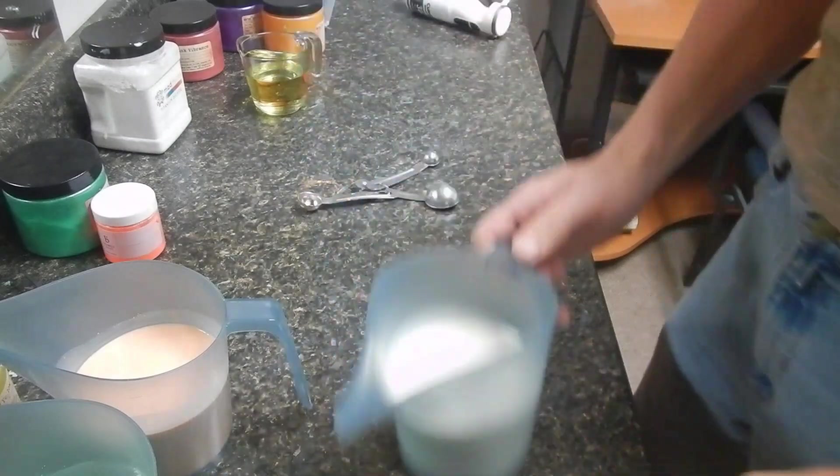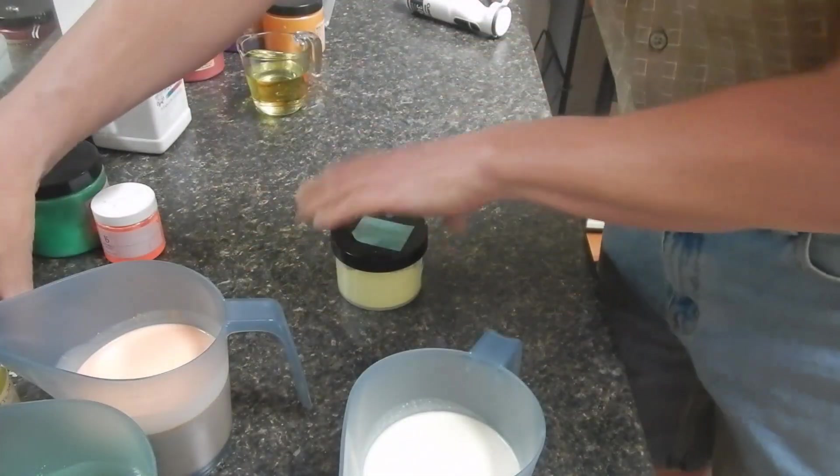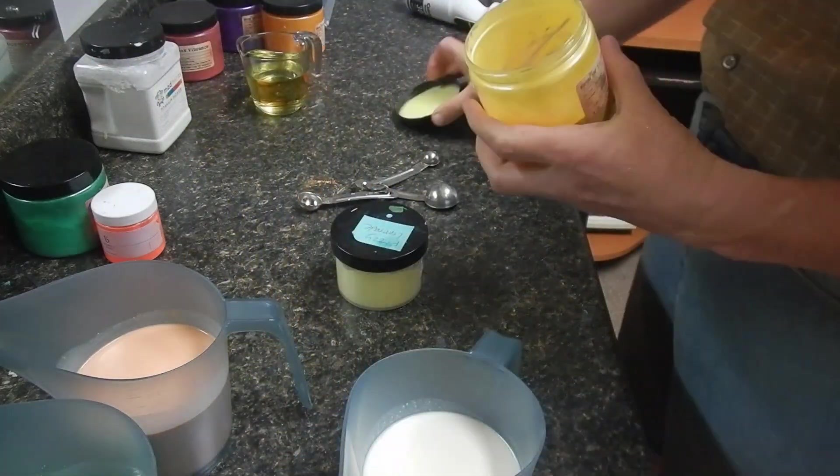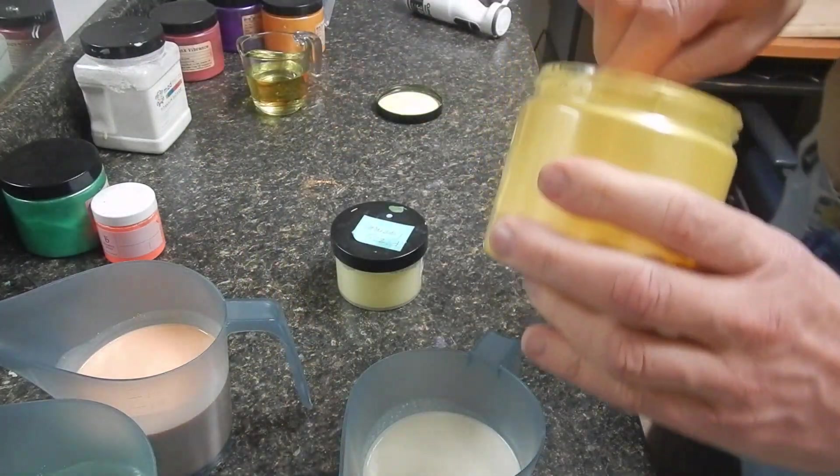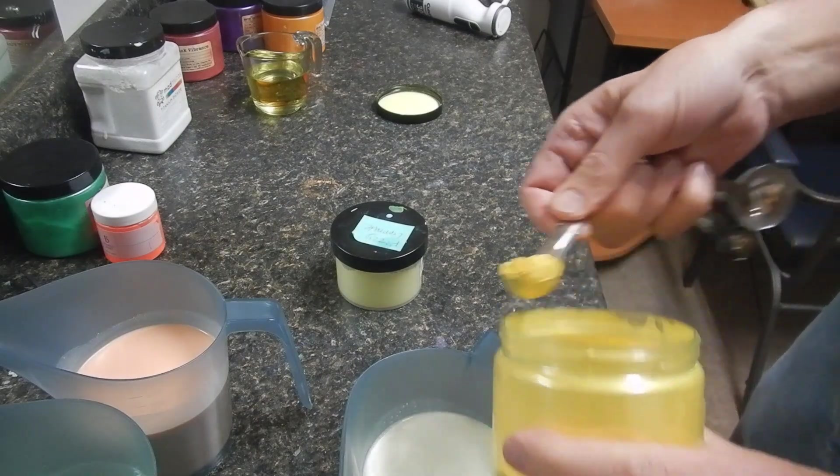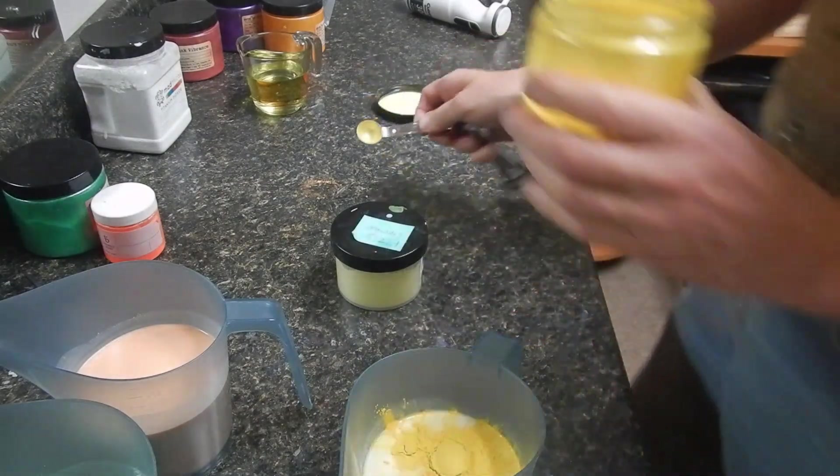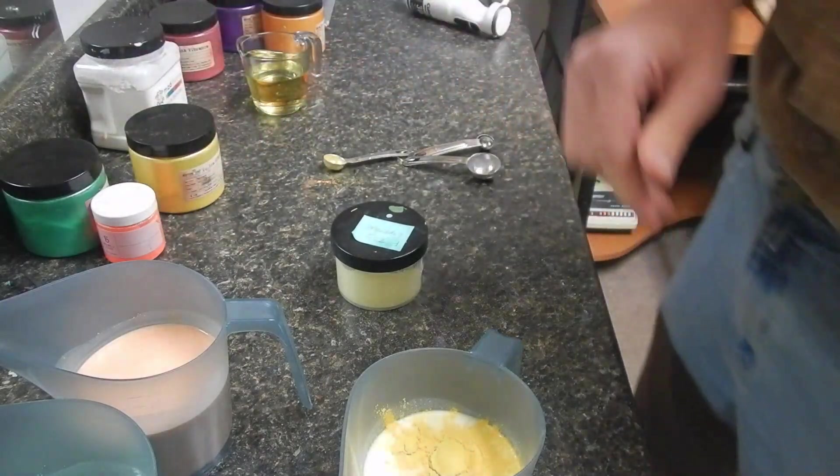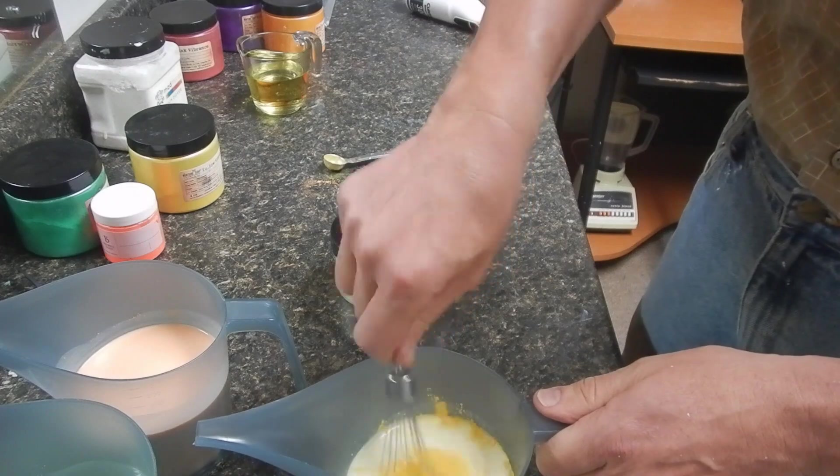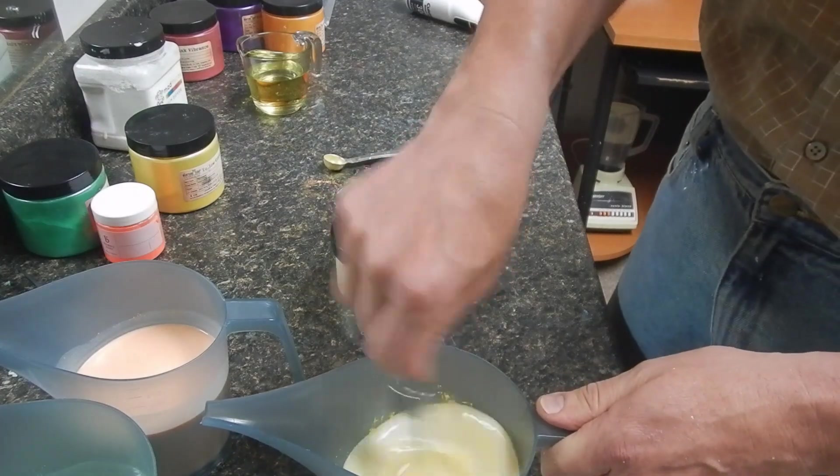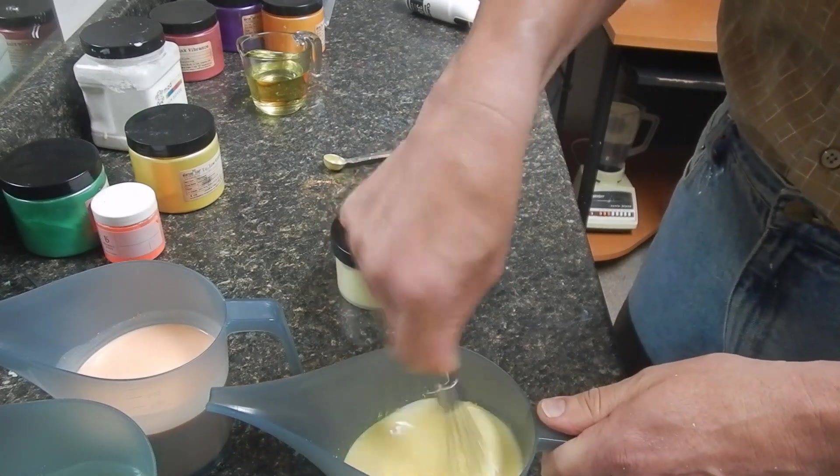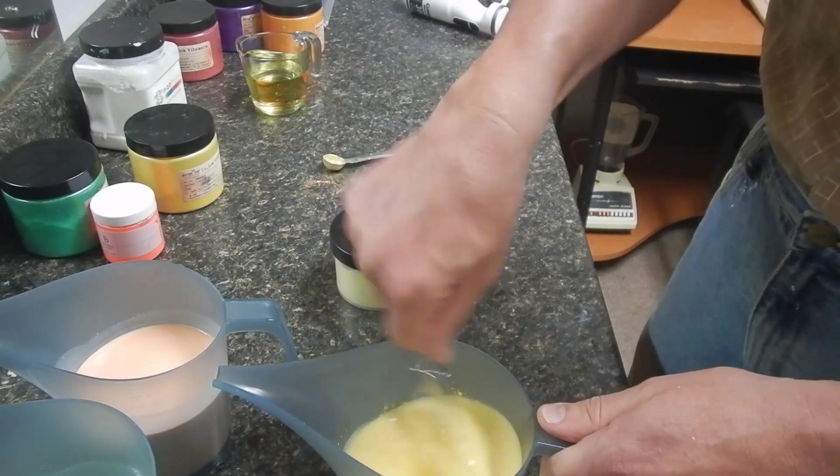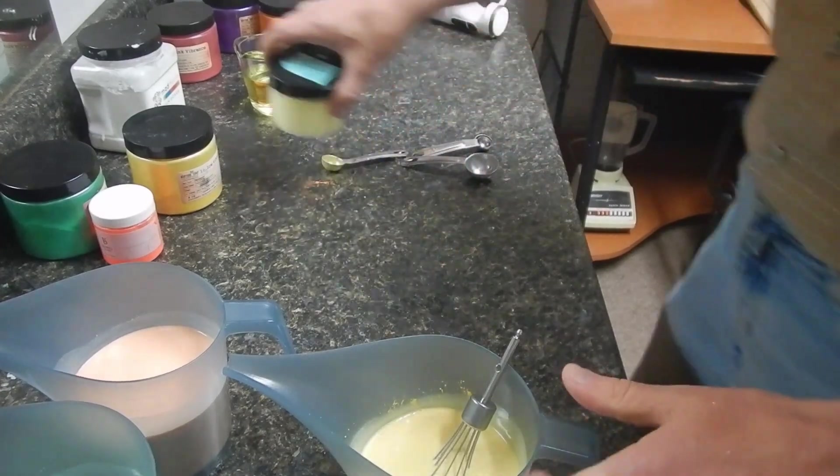So then our final is going to be yellow, which is Nurture Soap's Yellow Vibrance. Once again, I'm going to add a little bit of the Neon, which is Bramble Berry's Fizzy Lemonade, to stabilize it because yellows are not the most stable in cold process. But I'm going to put it in at the very last minute.